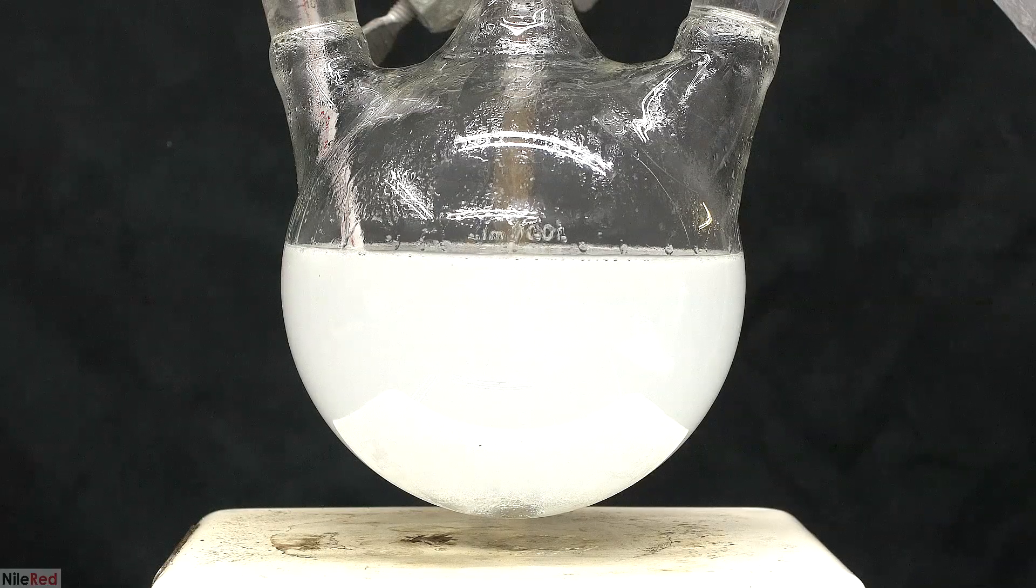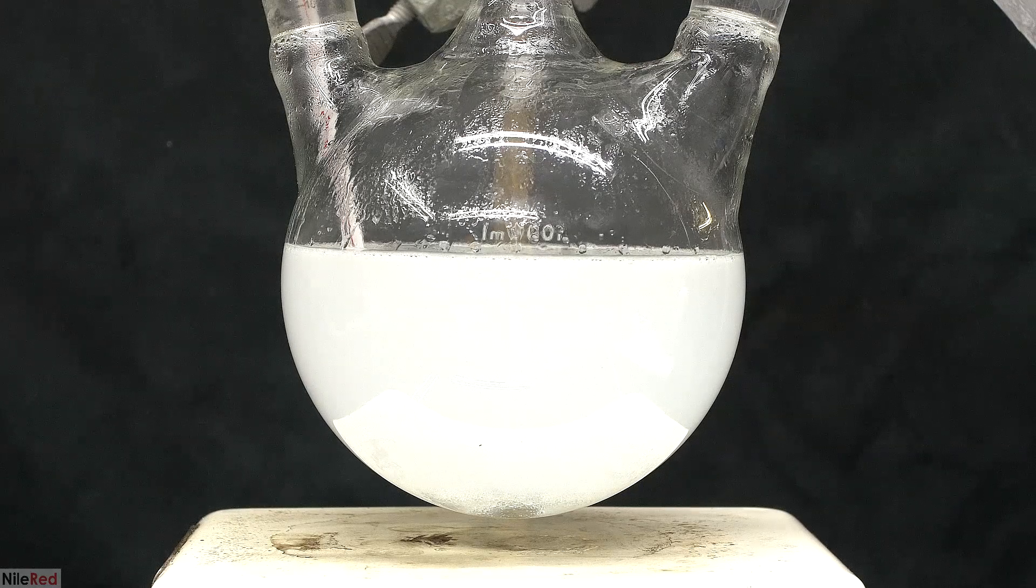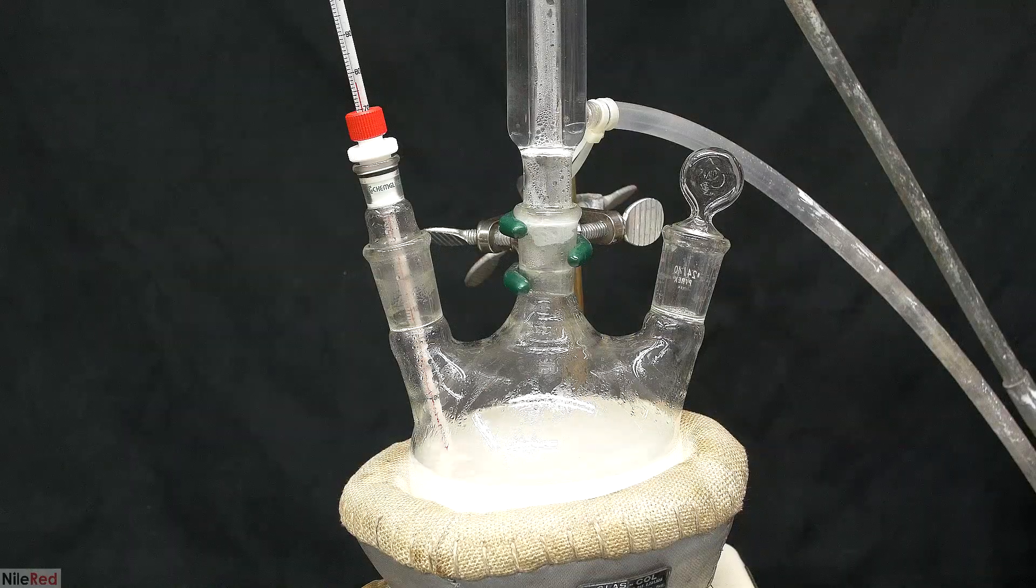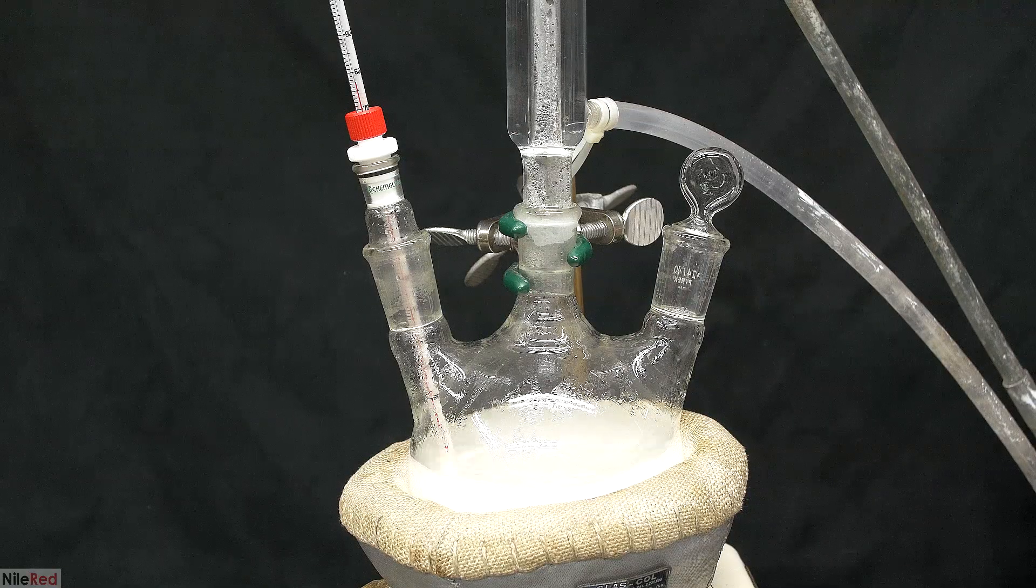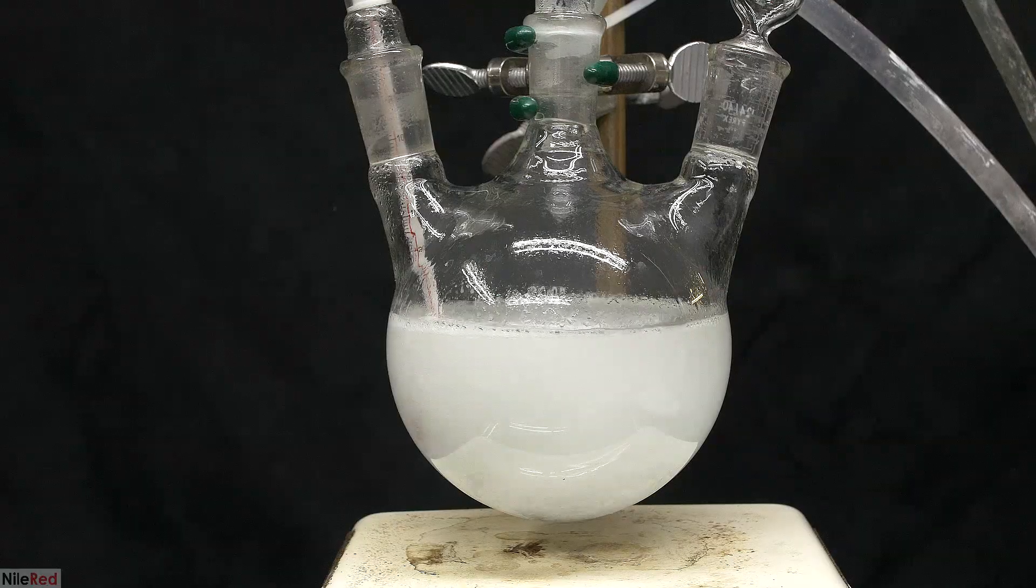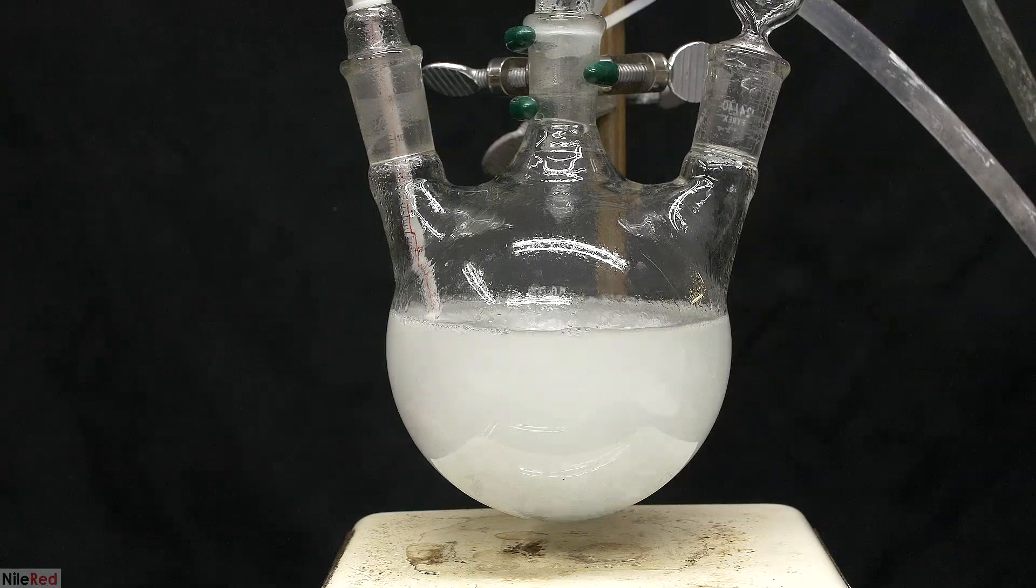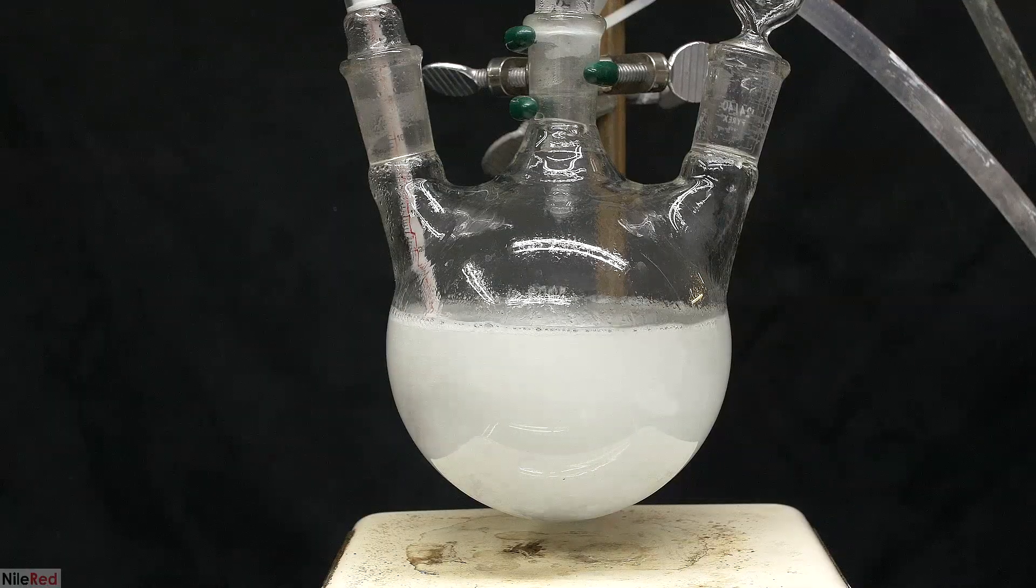When I stopped the stirring earlier, a layer of cyclohexanol formed at the top, but apparently that's all gone now. Because the temperature was dropping, I put the heating mantle back on, and I started to heat things again. I really thought that the bulk of the reaction was over, but once I got to around 85 to 90C, the reaction took off again.